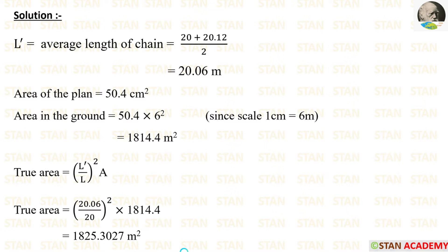Now, let us go for the solution. The chain has two lengths. Before the survey, 20 meters and after the survey, 20.12 meters. So, we have to find out L dash, that is the average length of the chain. 20 plus 20.12 by 2, we will get 20.06 meters.